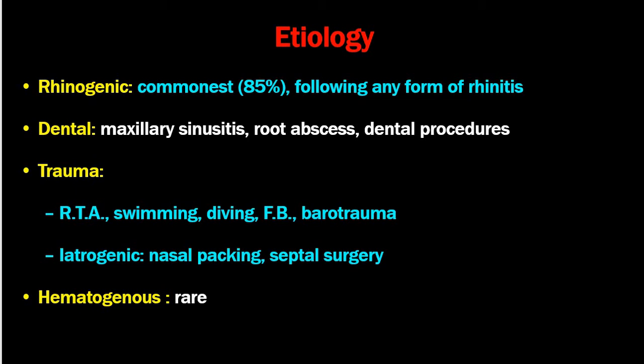The basic disease origin of rhinosinusitis is predominantly rhinogenic, accounting for around 85% of cases, following any form of rhinitis — initially viral infection then bacterial invasion. Dental maxillary sinusitis can spread from adjacent teeth. Other causes include trauma such as road traffic accidents, swimming, diving, foreign bodies, barotrauma, and iatrogenic causes like nasal packing and surgery. Hematogenous spread is rare but may occur in immunocompromised individuals.